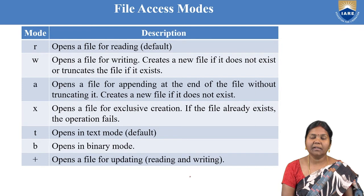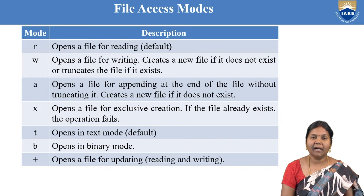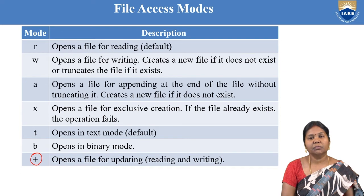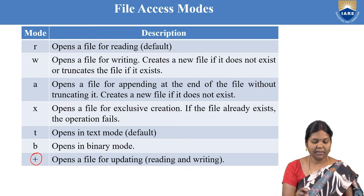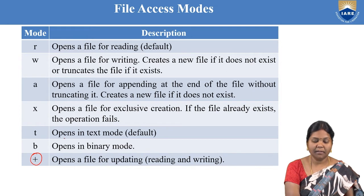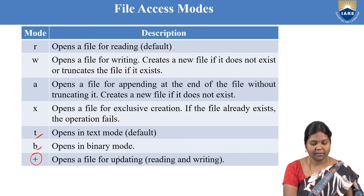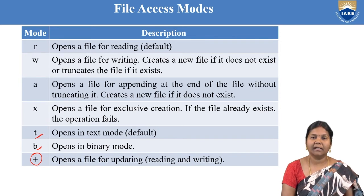Along with the basic modes, let us talk about what 't' and 'b' mean. Since there are two types of files, 't' stands for text file and 'b' stands for binary file. These file handling modes are common for both text files and binary files. The '+' is an additional operator used to indicate that a file can be opened in dual mode — both reading and writing, or updating and reading, and so on.